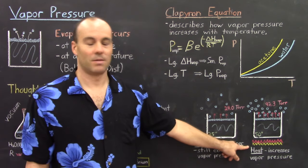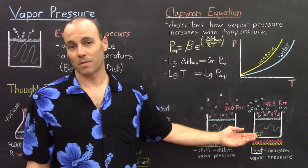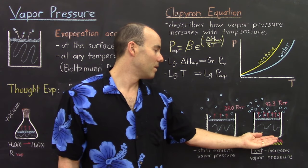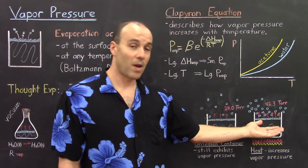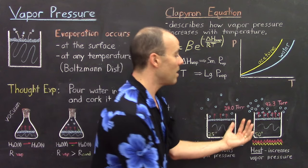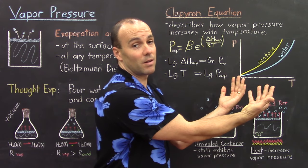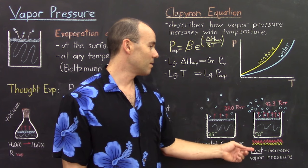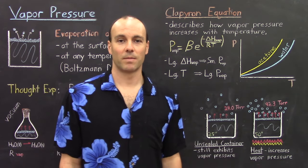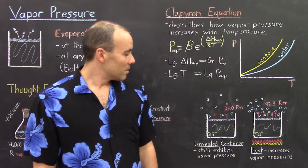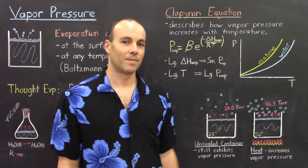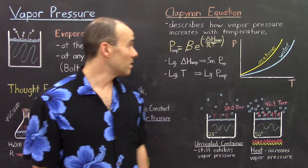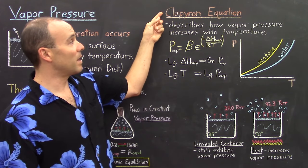Now what would happen if we were to increase the temperature of this water? When you increase the temperature, you're giving the liquid more thermal energy, and a larger fraction of these molecules will be able to vaporize. So the rate of vaporization will now become greater, and that means a corresponding increase in the vapor pressure. And at 50 degrees Celsius, the vapor pressure of water is 92.3 Torr. As the temperature increases, so does the vapor pressure. But the relationship between temperature and vapor pressure is not a linear relationship — it is, in fact, an exponential relationship, which is described by the Clapeyron equation.